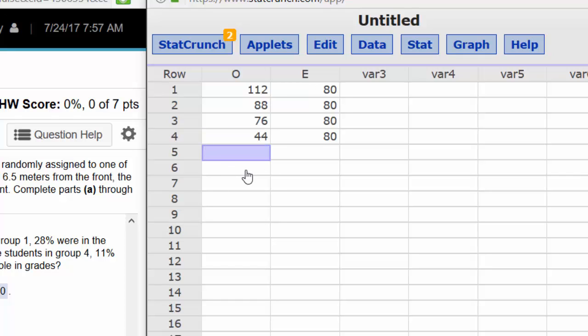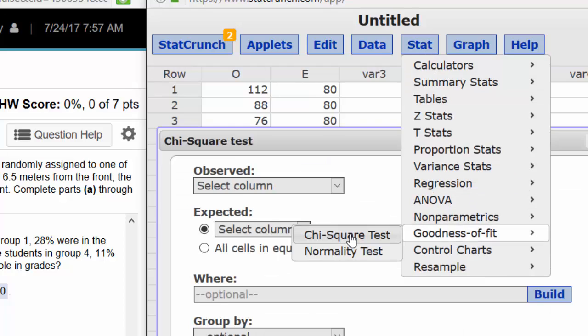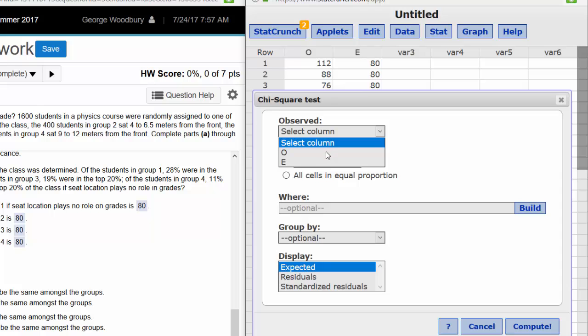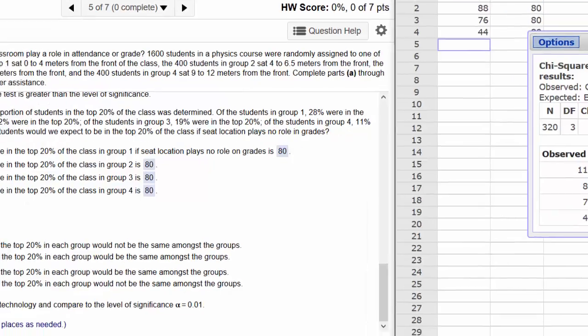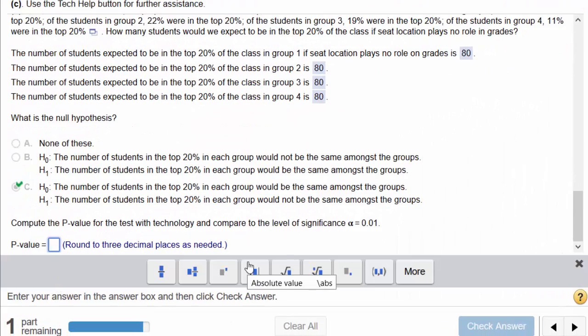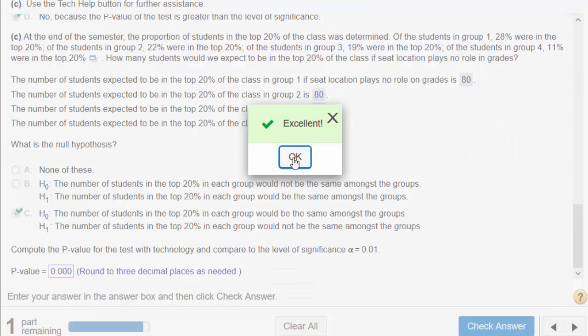Now I can rerun this test one last time. Stat, goodness of fit, chi-square. Observed is in observed, expected is in E for expected. Compute. The p-value is extremely small, less than .0001. So to three decimal places, that is 0.000 or just zero. Check the answer. Excellent.